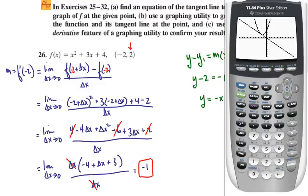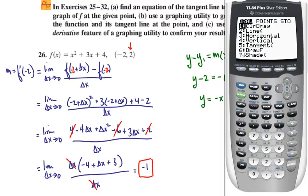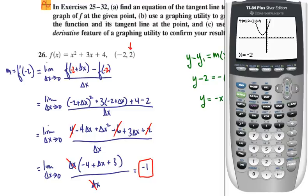I'm going to do it a slightly different way now by first turning off that one function. Where the equal sign is highlighted, I'll hit enter. When I graph, it will only show the one function. Then I'll come to second draw, and option 5 draws the tangent line when I type in the x value, negative 2. It gives me the equation y equals negative x.